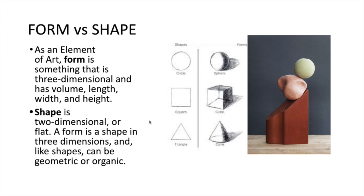This would be a very geometric shape right here — this square — whereas an organic shape might be something like a blob that's drawn. The important thing to remember is that it is form when you can measure it in three different directions: the width, the height, and the length. Whereas over here I could only do the width and the height, so that one would just be shape, not form.